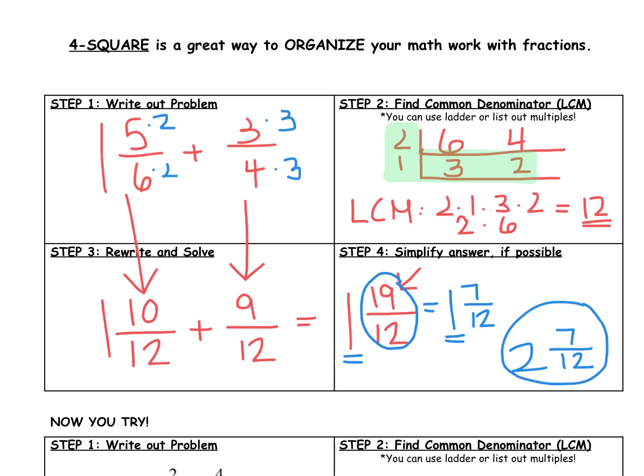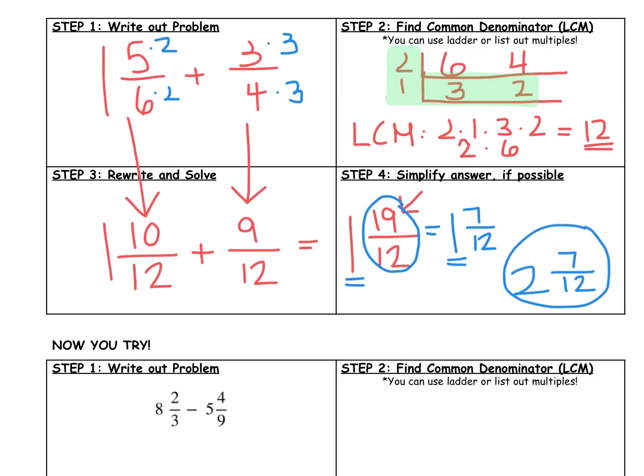Now it's your turn. I'd like you to use the foursquare method to find the answer to eight and two-thirds minus five and four-ninths. Once you finish this problem, please go back to the assignment in Google Classroom, where you will find mild, medium, and spicy problems to complete. Please choose one level and show your work on lined paper. You may use any strategy that's on the front of your notes. Have a great day! Bye!